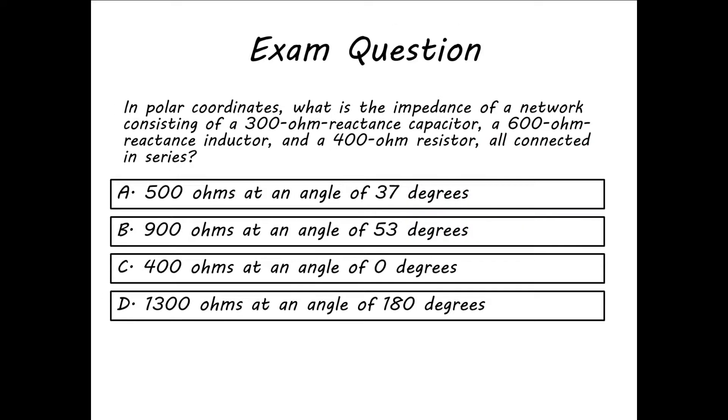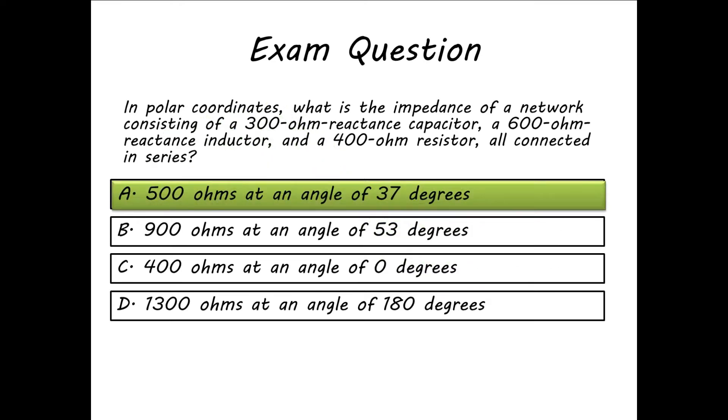Let's look at the answers again. We have two answers that have an angle less than 45 degrees. Answer C isn't possible because it says we have an angle of 0 degrees, and that would be a horizontal line with no reactance. We know we have some reactance, so the only answer that's possible to us is answer A at 37 degrees, and that's the right answer.